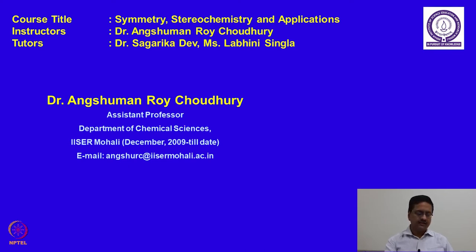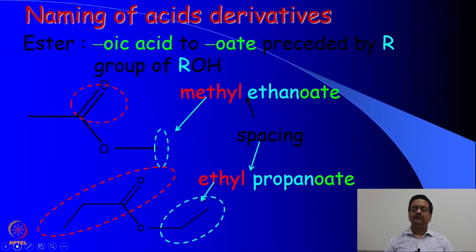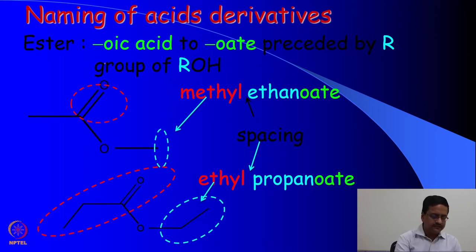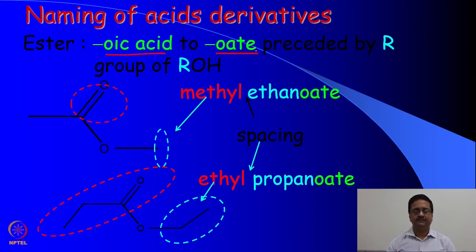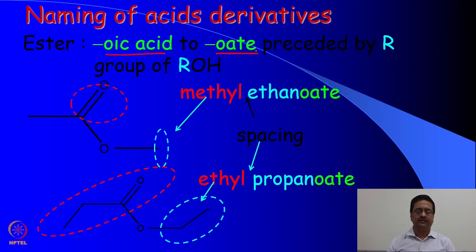In the previous lecture, we were discussing about the nomenclature of compounds derived from the carboxylic acid. Here we will continue that discussion. When you are trying to name the derivatives of carboxylic acids, as we all know that carboxylic acids are written as 'oic acids.' Ethanoic acid becomes ethyl ethanoate or methyl ethanoate and things like that.